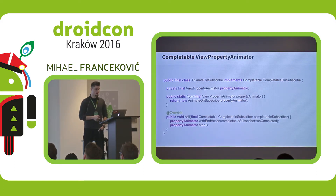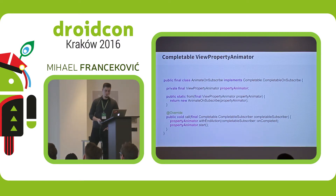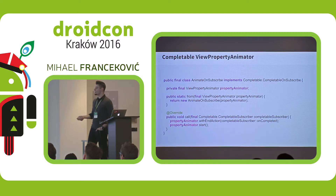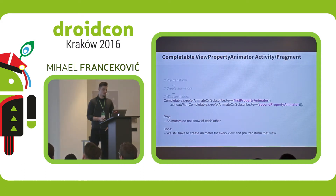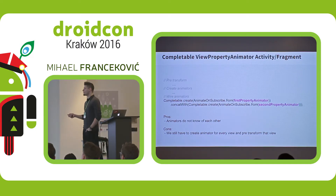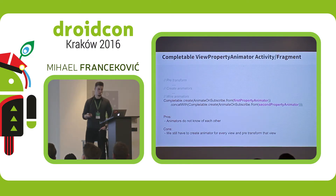How our class looks like — this first animated version of our class — we can just wrap the property animator. We give it a view property animator to our class, and when we subscribe to it, we just call viewPropertyAnimator.start(). Here we chain up the end action where we call onComplete. And what did we get with this? Our view still has to pre-transform, and we still have to create the animators, but the chaining looks nicer because now each ViewPropertyAnimator does not know about other ones. We can easily swap them out and chain them up as we like.